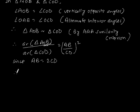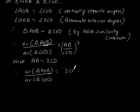we can write area of triangle AOB by area of triangle COD is equal to 2CD by CD whole square, which is equal to 4CD square by CD square.